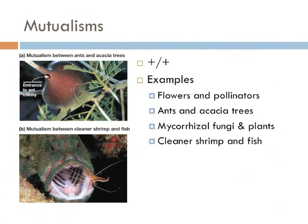Certain ants have a mutualistic relationship with acacia trees in the Amazon. The trees provide everything the ants need — they have thorns swollen into specialized chambers that serve as homes, and the trees also dispense food packets that the ants consume. In return, the ants attack anything that comes too close to the tree, including animals, and they remove plants that would compete for light.